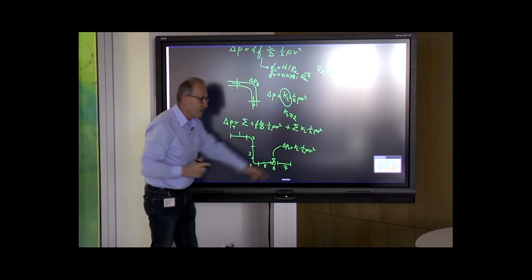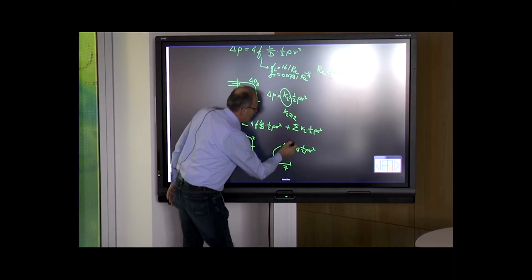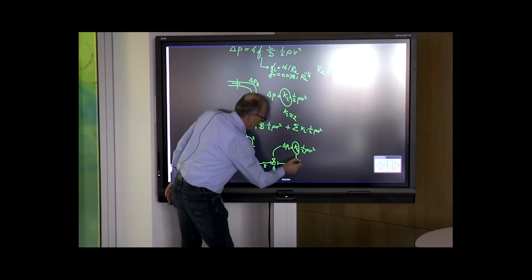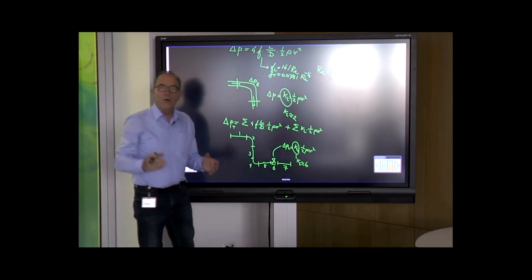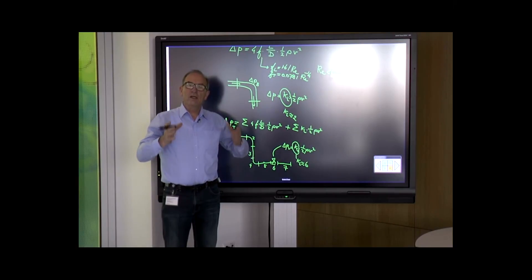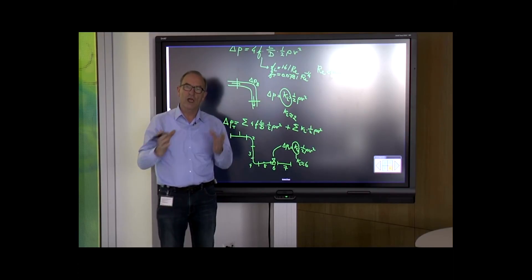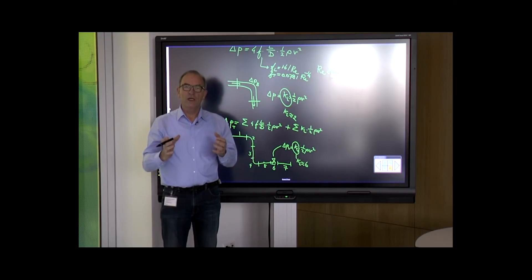In this case, KL will have a completely different value than the bend—for example, KL could be 6. In this way, for complex systems, you get a good estimate of the pressure loss over straight pipes, valves, and fittings.